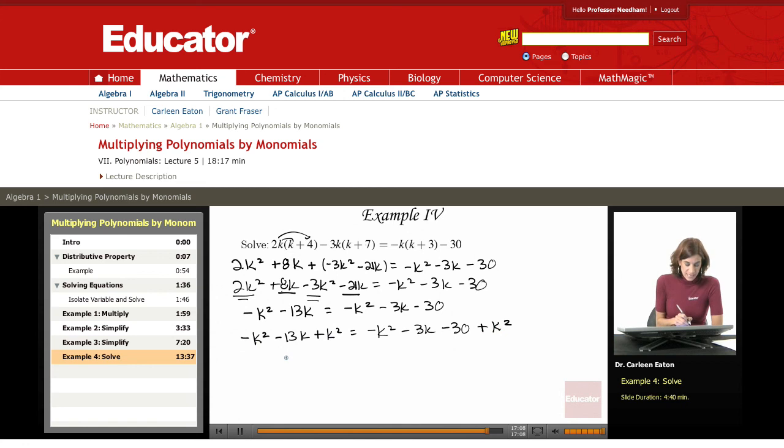So negative k squared plus k squared becomes 0. On this side, the same thing. Negative k squared plus k squared also becomes 0. And this leaves me with something that's pretty easy to work with. I now have negative 13k equals negative 3k minus 30.